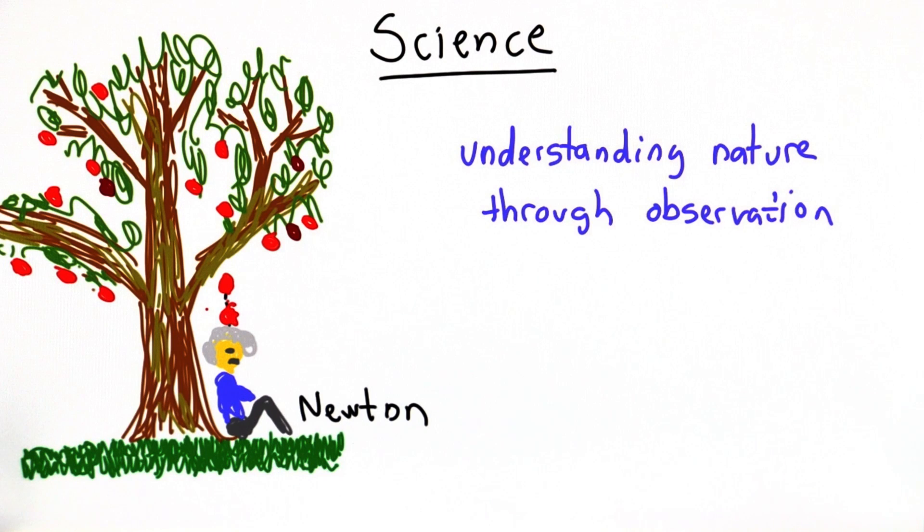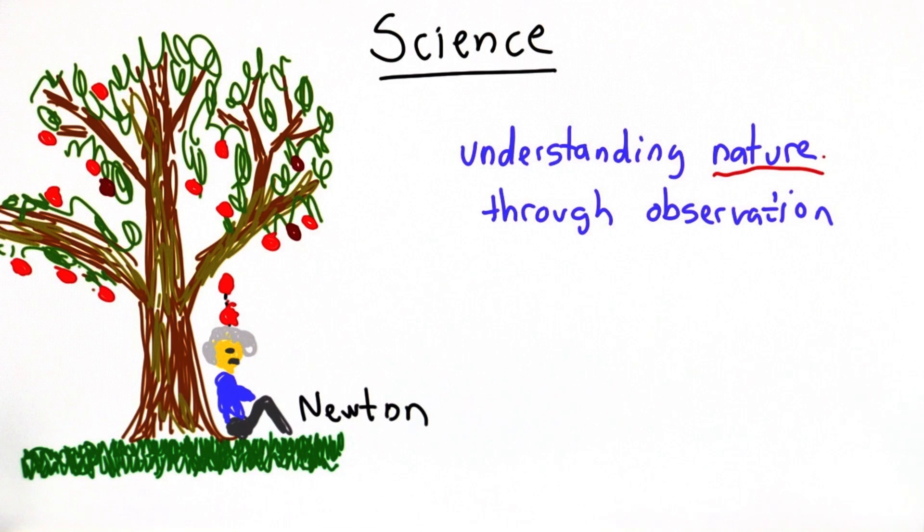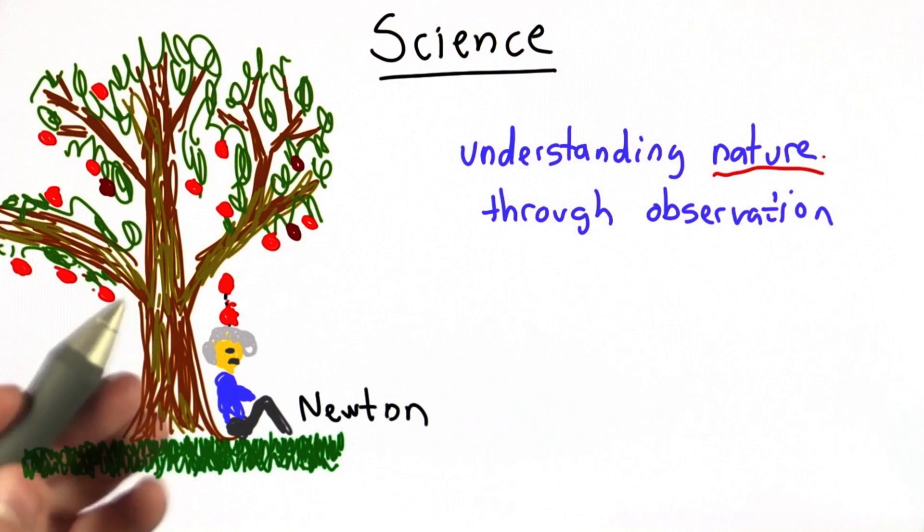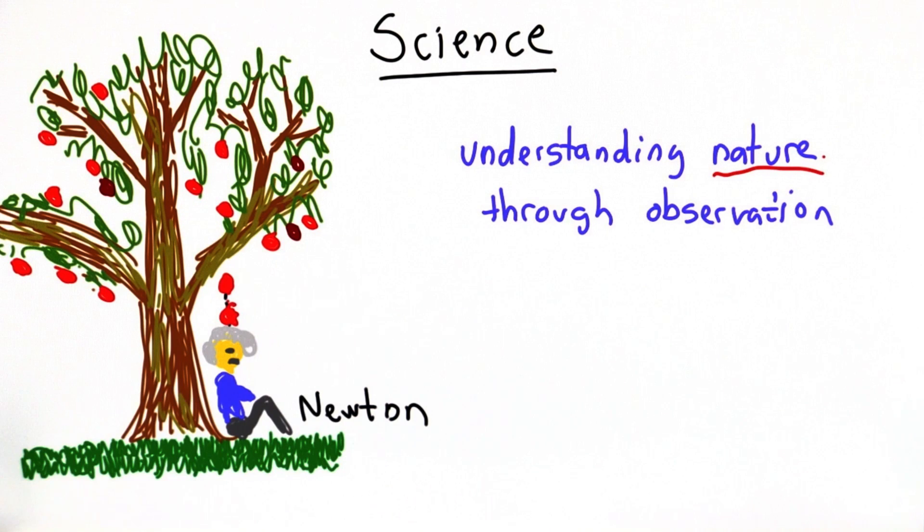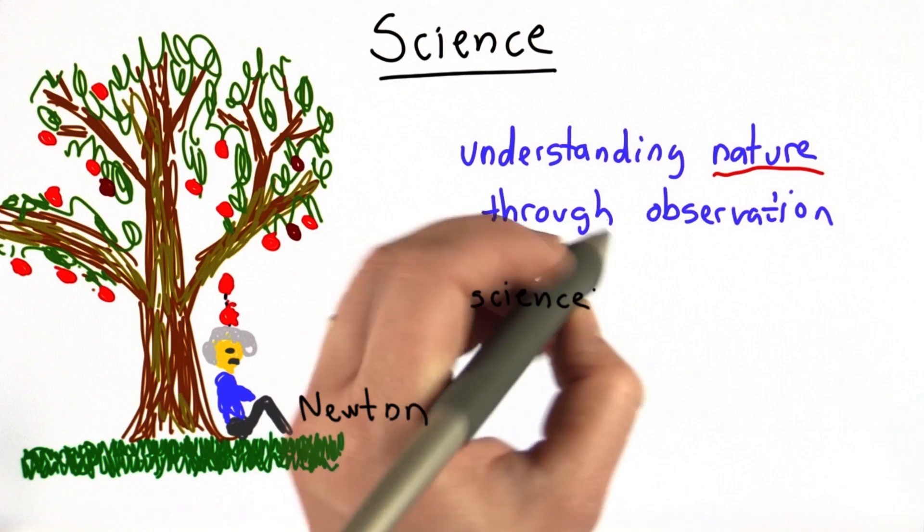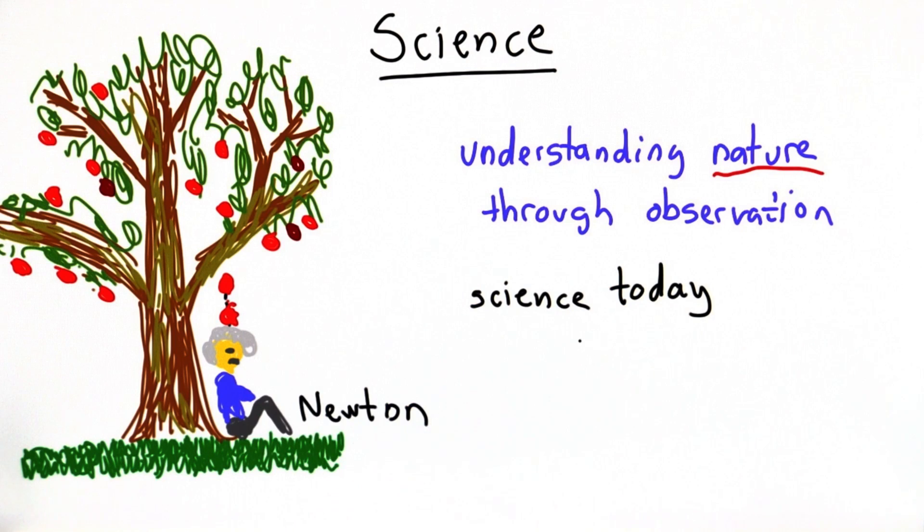In computer science, we're mostly not focused on understanding nature, at least not in a very direct way. We're thinking about abstract things. We're writing programs to solve problems, but they're dealing with abstract representations of those problems. Certainly computing is used all over the place to build better models of the universe and to test those models. But that's a little different from saying that computer science itself is a science.